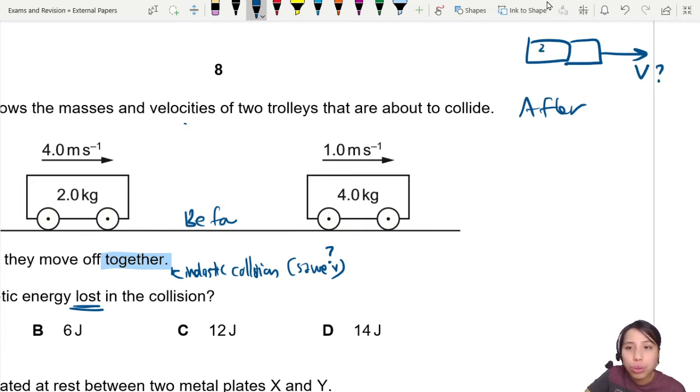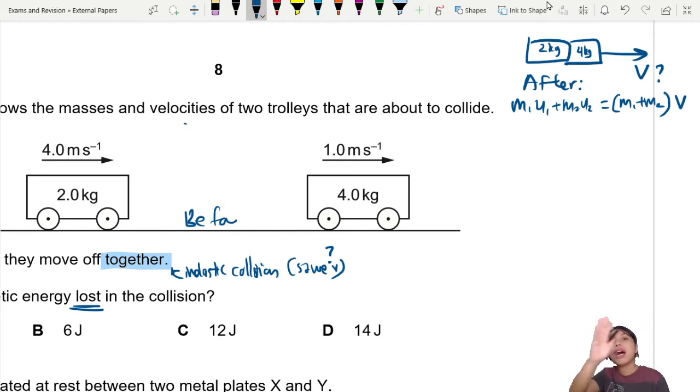So we know this one is 2 kg. This is a 4 kg. So we are going to find the velocity after collision and we're going to use the momentum conservation equation. So that will be M1U1 plus M2U2 equals to, stuck together, right? So M1 plus M2 times the velocity. So total momentum before is equal to total momentum after collision.